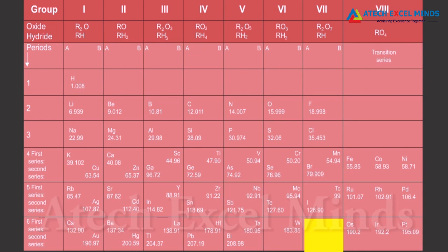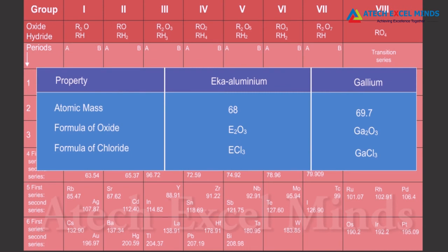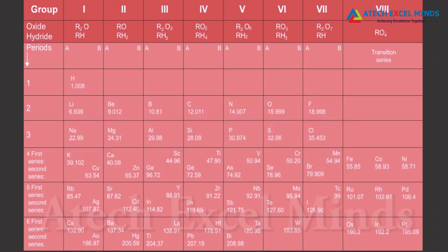Further, Mendeleev left gaps in his periodic table and boldly predicted the existence of elements not yet discovered. He named them by prefixing a Sanskrit numeral 'eka' — meaning 'one' — to the name of the preceding element in the same group. For example, scandium, gallium, and germanium, discovered later, have properties similar to eka-boron, eka-aluminium, and eka-silicon respectively. The properties of eka-aluminium predicted by Mendeleev matched those of gallium.